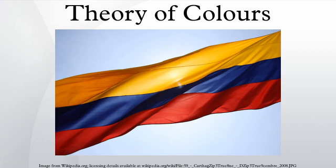For Goethe, the highest is to understand that all fact is really theory. The blue of the sky reveals to us the basic law of color. Search nothing beyond the phenomena — they themselves are the theory. Goethe delivered in full measure what was promised by the title of his work, Data for a Theory of Color: important, complete, and significant data — rich material for a future theory of color. However, he has not undertaken to furnish the theory itself.